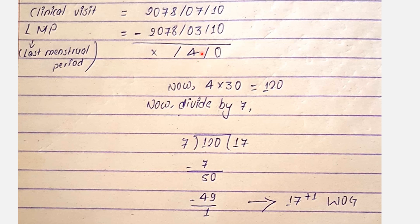For those 5 months, we convert to days: 5 multiplied by 30 days equals 120 days. We then take the total days and divide by 7 to get weeks.